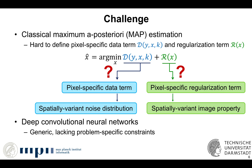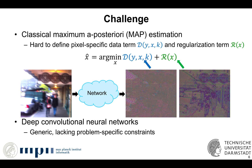To overcome these limitations and leverage the power of these techniques, we first adopt a deep neural network to learn to construct spatially variant data and regularization terms, and then use the MAP-based optimization framework as a constraint to facilitate a task-specific network for non-blind image de-blurring.